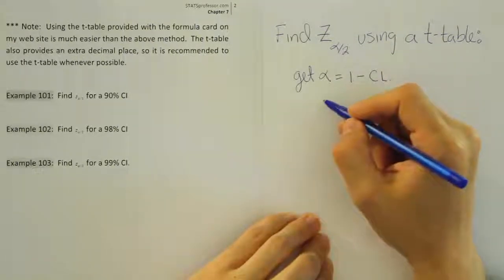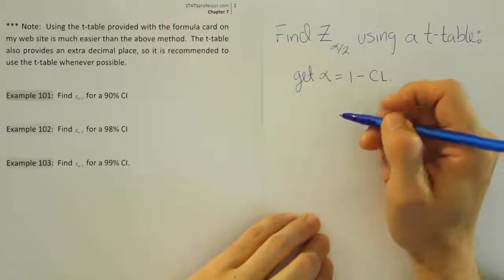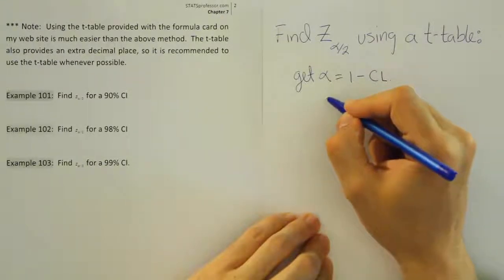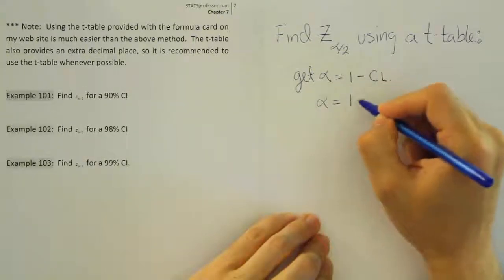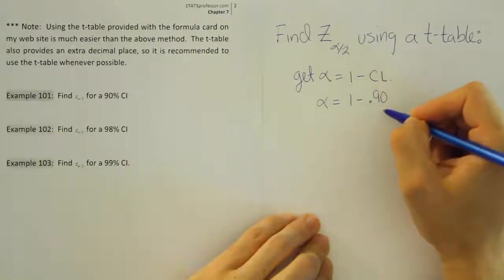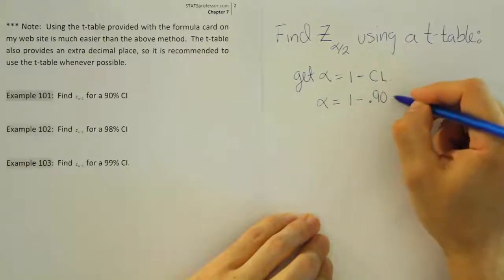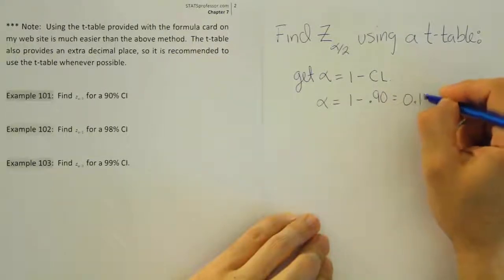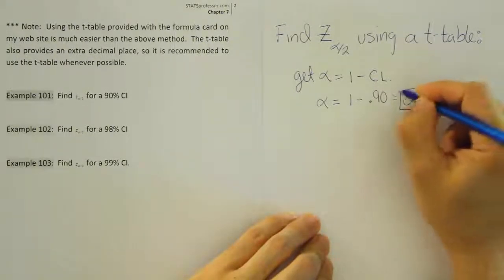So for us, that means in this first example, for 101, we can say that our alpha is going to be 1 minus 0.90, 90% as a decimal. And when you're done with that, it's going to give you 0.10. So there you have your alpha. Now once you have alpha, we need to know what alpha divided by 2 is.